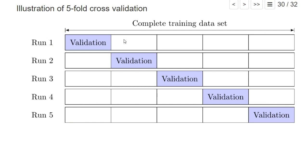For five-fold cross validation, we first do the same thing as before: we split our training data set into one validation set — exactly one-fifth of the whole training data set — and the remaining 80%, which is the remaining training data set. We then estimate our model on this remaining training data set for each hyperparameter value combination and assess the out-of-sample prediction accuracy on the validation data set.